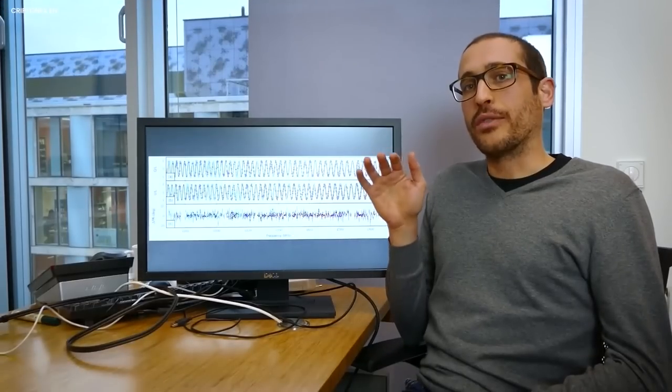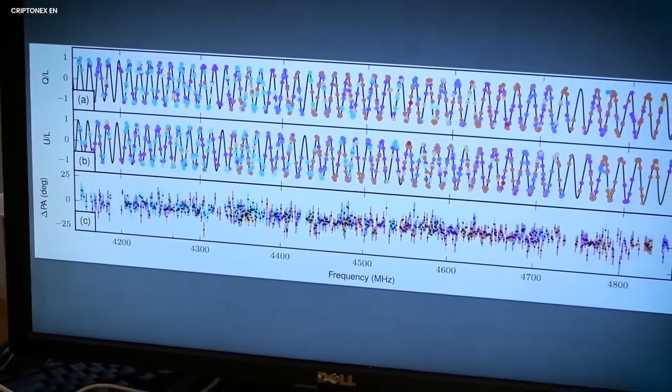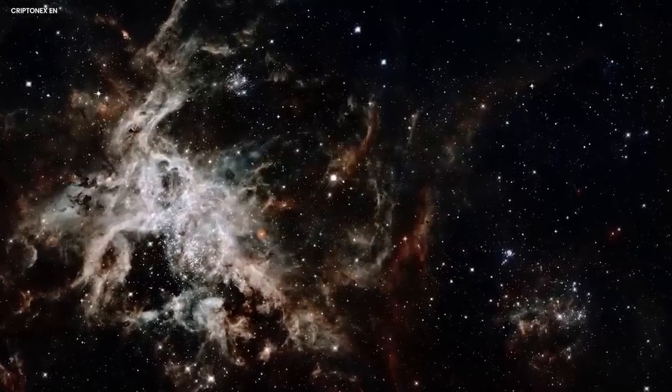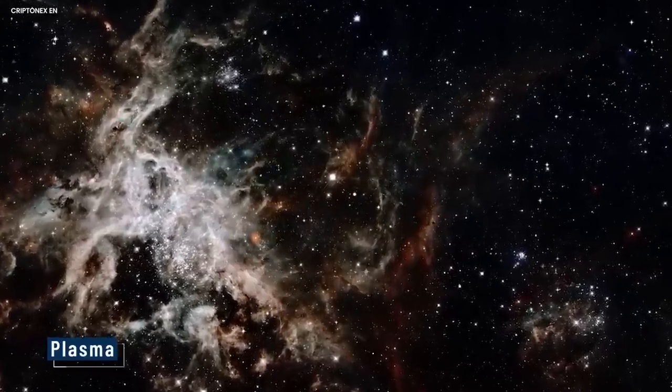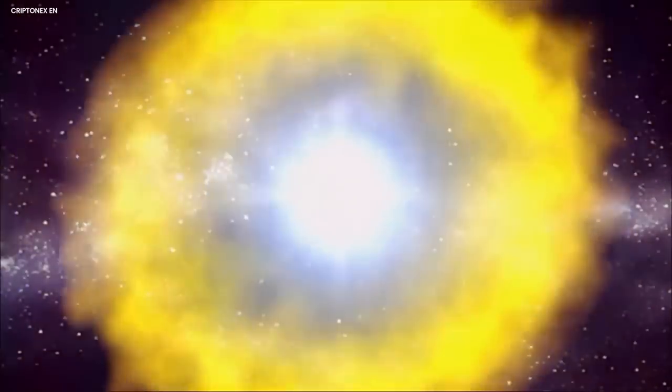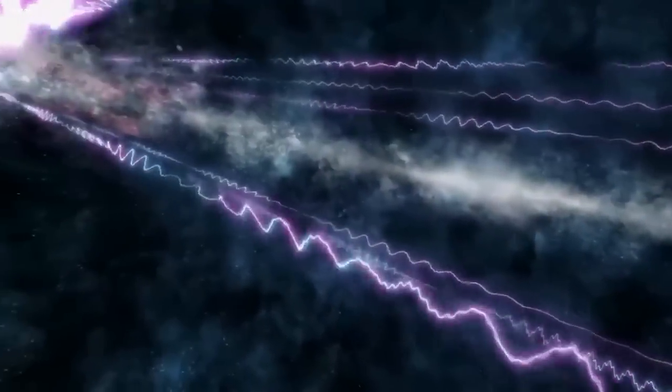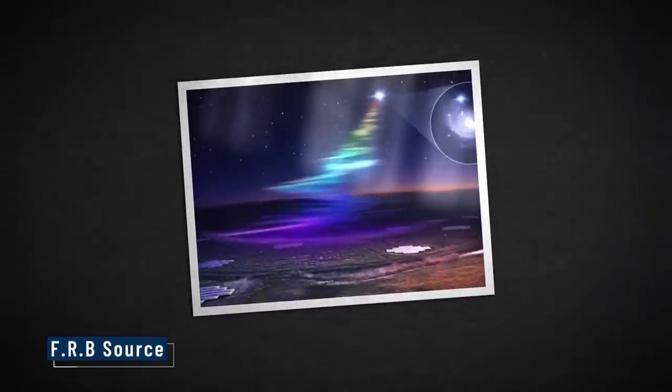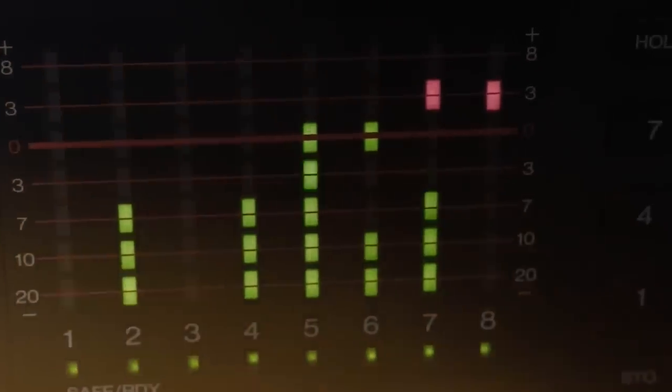One crucial aspect in understanding FRBs is the dispersion effect. As radio waves traverse the vast expanse of space, they encounter plasma, which causes delays in their arrival on Earth. Higher frequencies arrive first while lower frequencies arrive later. This phenomenon provides valuable information for determining the distance of the FRB source from Earth.